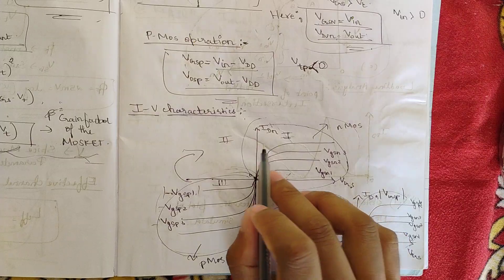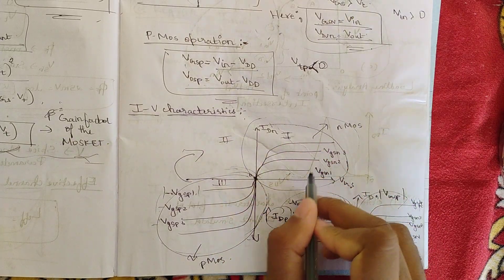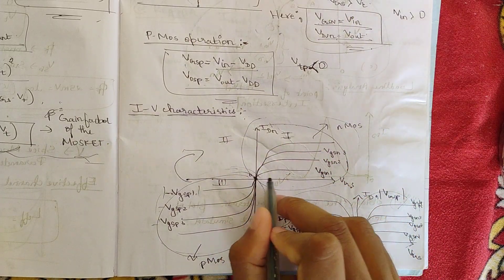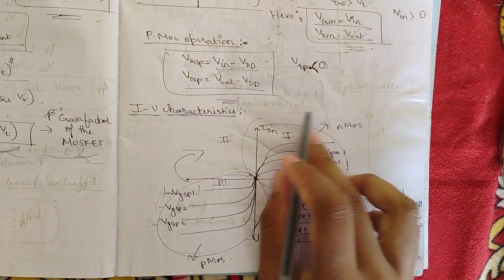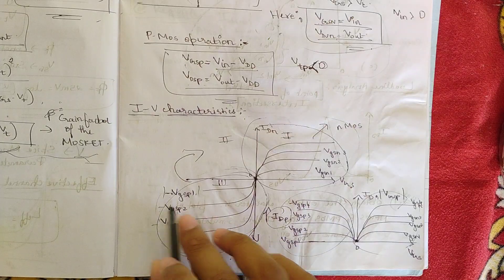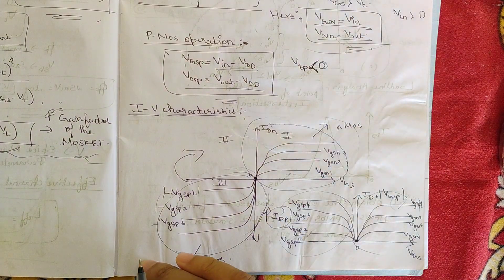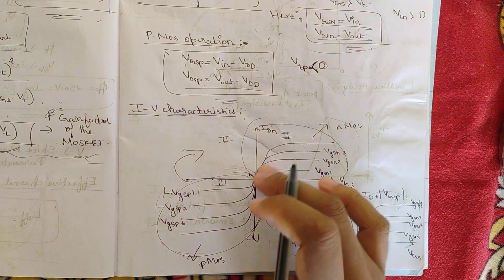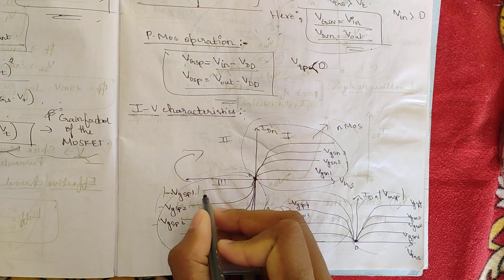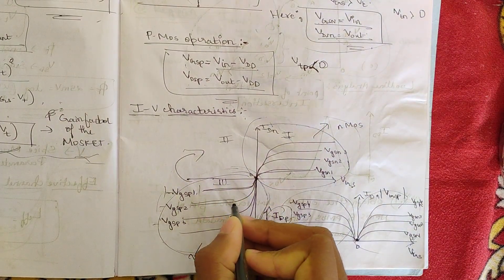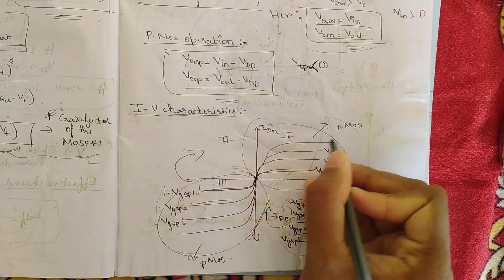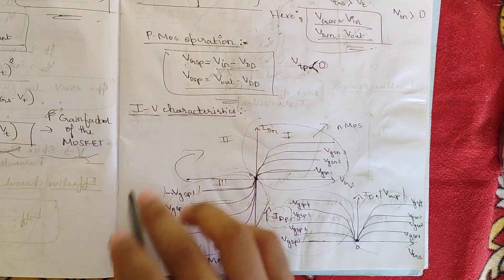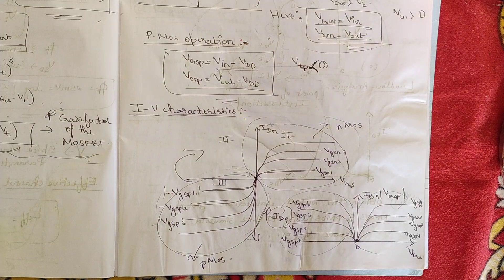For NMOS, the VGSN voltage increases and the curves tend toward a constant value in different cases. For PMOS, the behavior is opposite to NMOS, so the positive values tend toward negative. We have one plot, a second plot, a third plot, a fourth plot, and so on — forming the complete IV characteristic plot of the inverter.